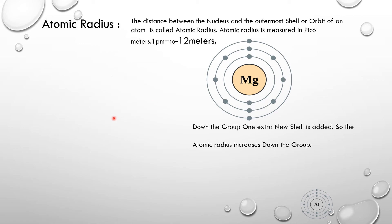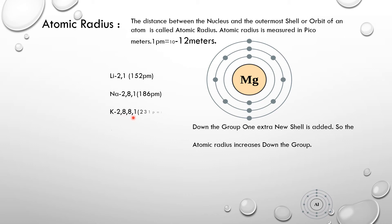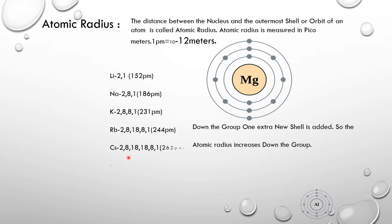Moving to potassium: one more shell is added, giving four shells (K, L, M, N), with configuration 2, 8, 8, 1. Its atomic radius is 231 picometers. Then rubidium has one more shell added — five shells — and the atomic radius further increases to 244 picometers. For cesium, one more shell is added and the atomic radius increases again to 262 picometers.